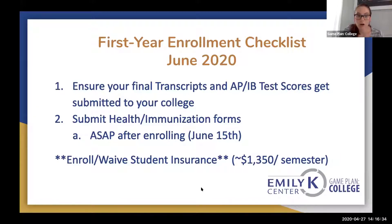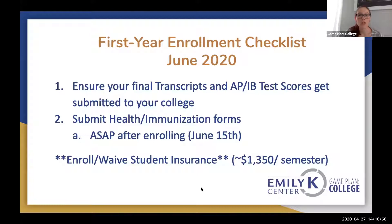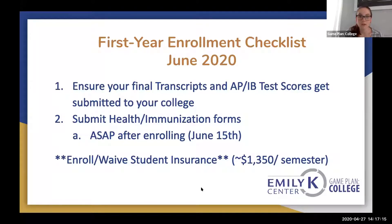Regarding health insurance, you'll need to either enroll in or waive your student insurance. If you do not waive it, you'll see a $1,300 charge added to your tuition bill. You can waive it if you are still covered under your parents' insurance. If you are not covered under your parents' insurance, you will need to enroll in student health insurance. Some schools have funds available if this is too expensive — if you're receiving a lot of need-based aid, they may be able to cover your health insurance as well.